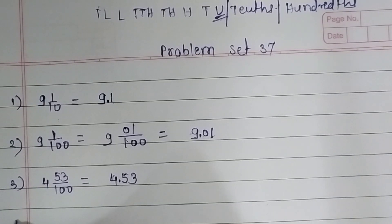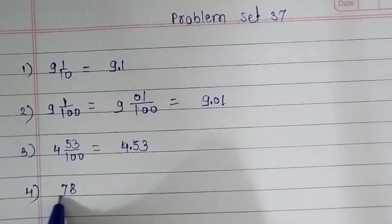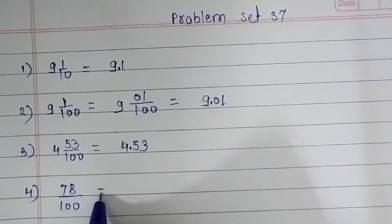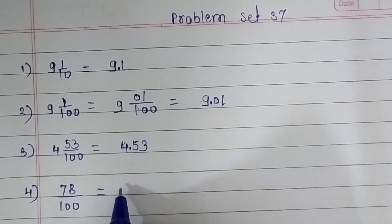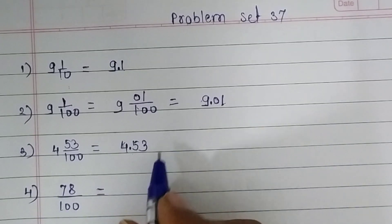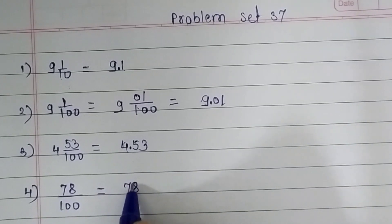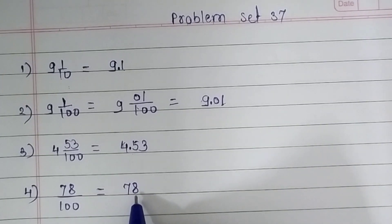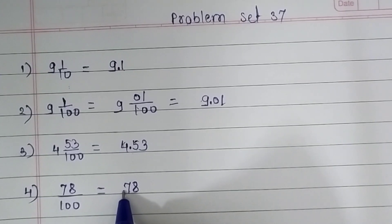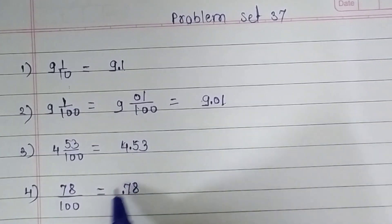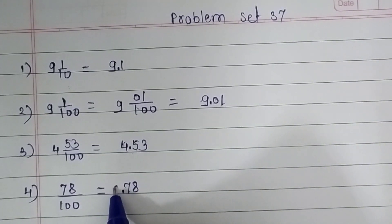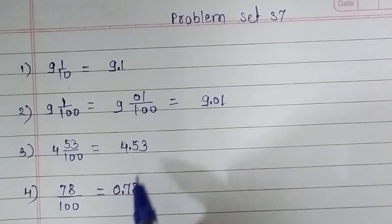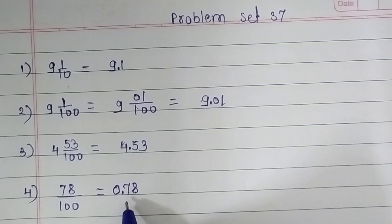Now the fourth question: 78 upon 100. This doesn't give a whole number, so it is not a mixed fraction. Write 78 — that is our numerator. Count how many zeros the denominator has: it has two zeros. Move two places from our right side — 1 and 2 — then place a decimal point. For the unit place we put 0, so our fraction is 0.78.